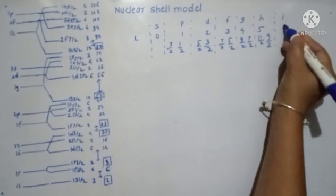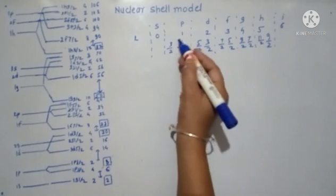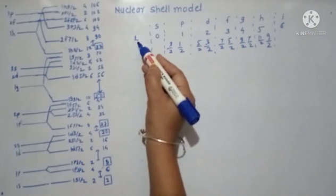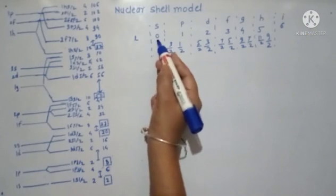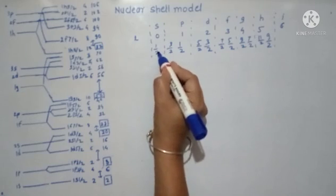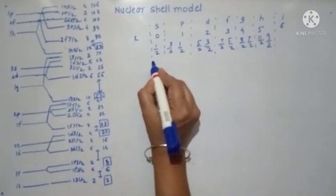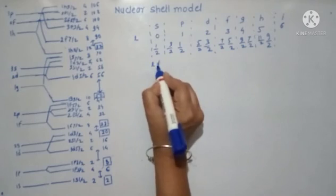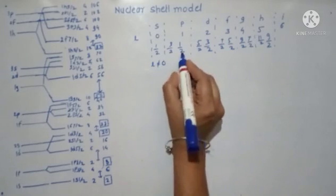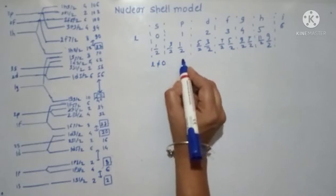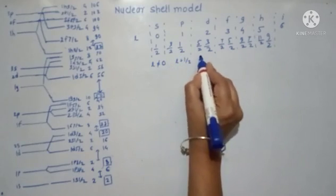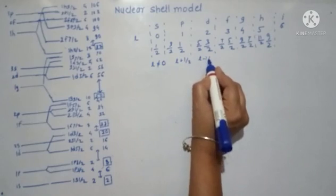This is I for L=6. You must know that for L equal to 0, the orbit is not splitting, so it will be only 1 half. For orbits for which L is not equal to 0, the orbit will split into L plus 1 half and L minus 1 half.